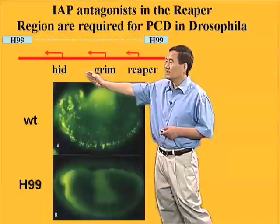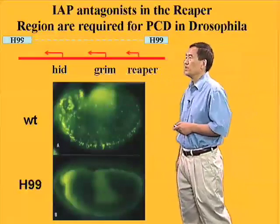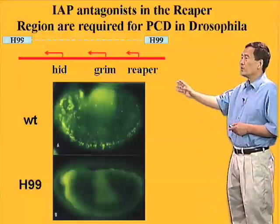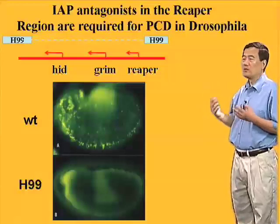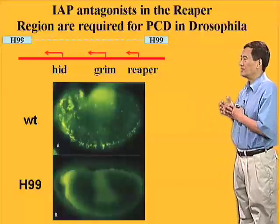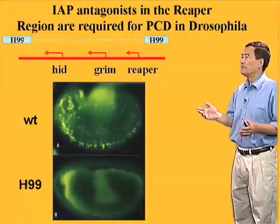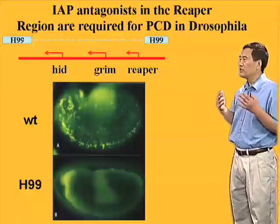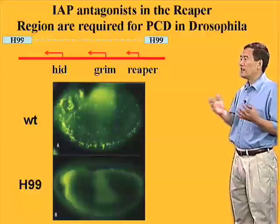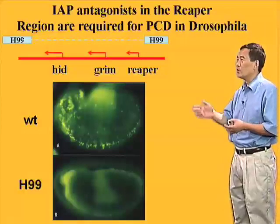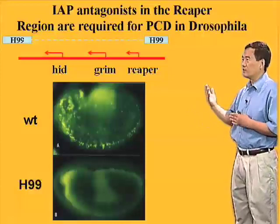They found three protein transcripts deleted in the H-99 mutant, and called them Reaper, Grim, and HID. Interestingly, these three proteins don't show much homology to each other except at their N-terminus — the significance of which will become clearer later. Also, for quite a while no mammalian homologous proteins could be found for Reaper, Grim, or HID, so it was unclear whether their function, though critically important for apoptosis in Drosophila, was conserved in higher organisms like mammals.